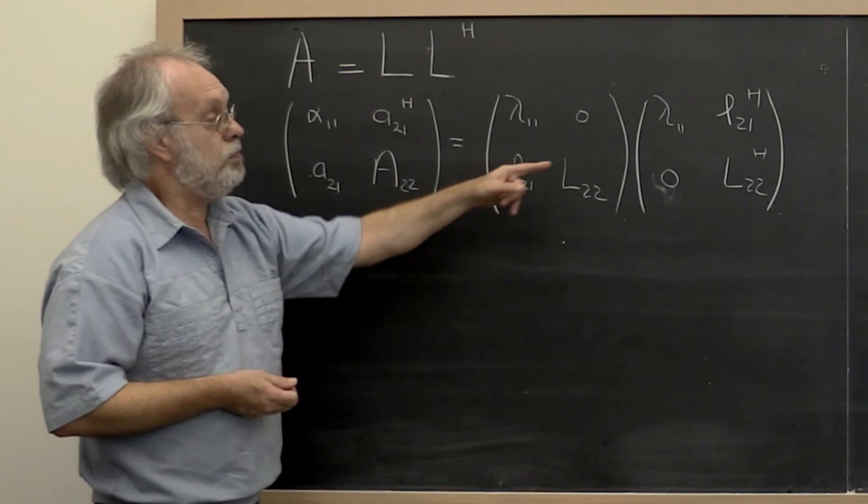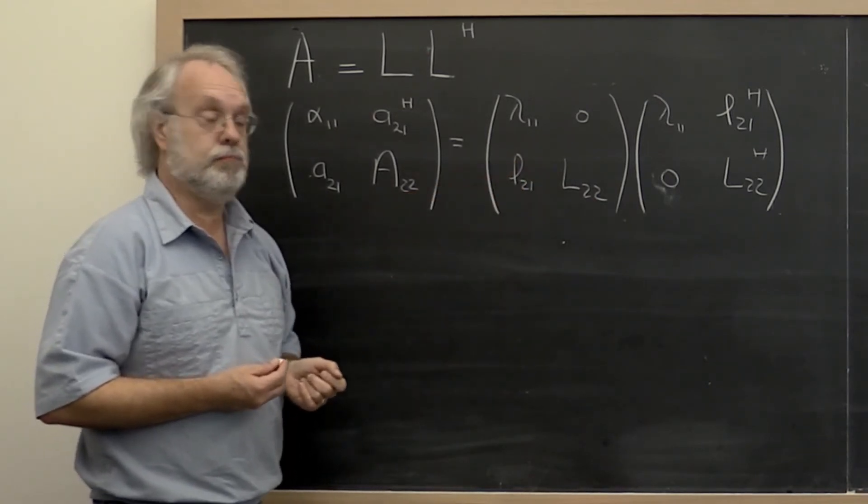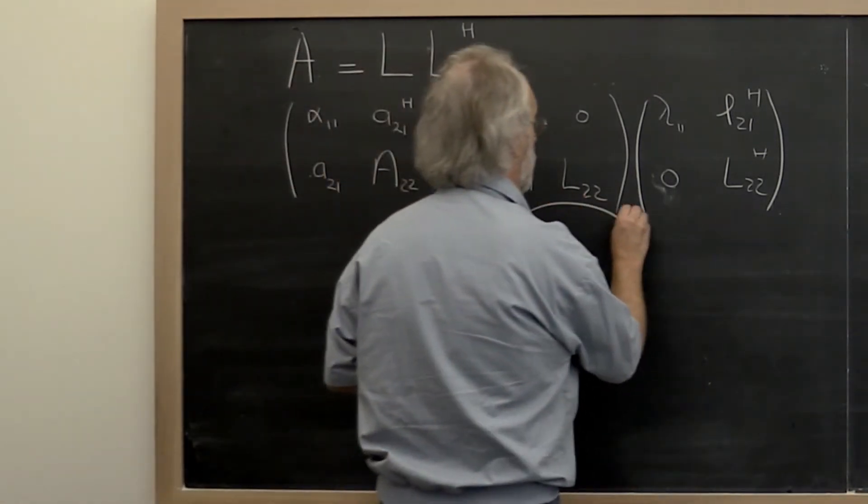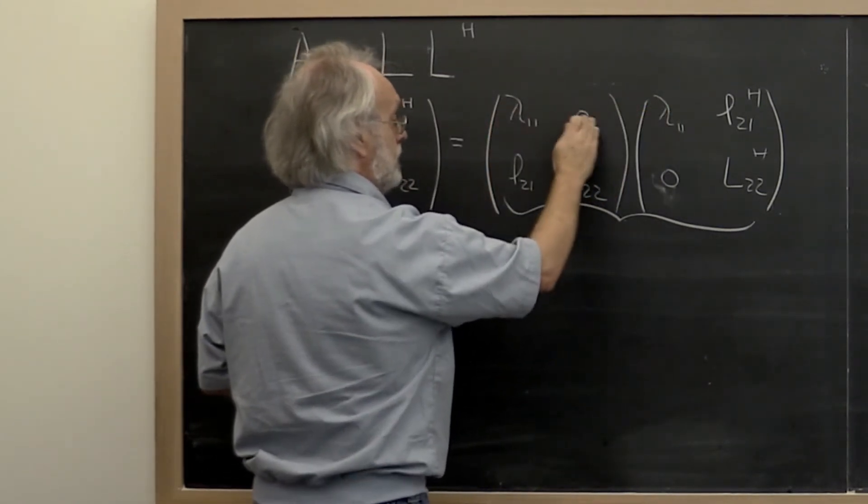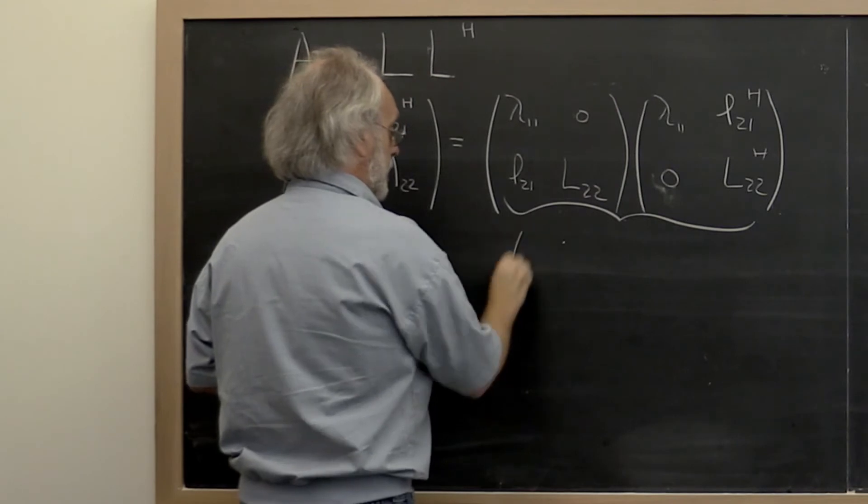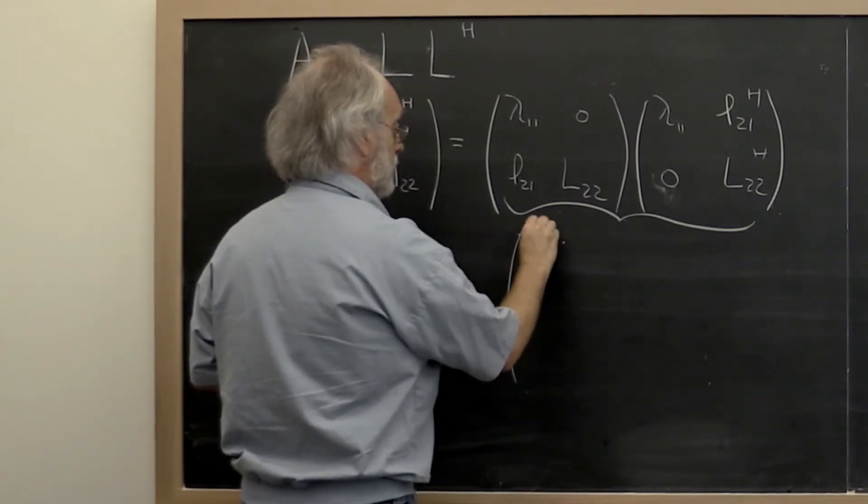Well, we typically go and we multiply all of this out. So what does this equal? Well, it equals this times that plus this times that. So that gives us a lambda_1,1 squared right here.